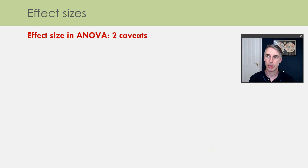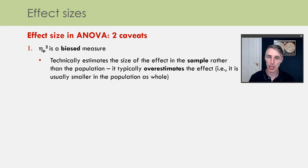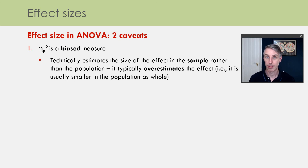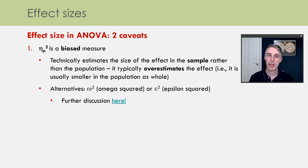Partial eta-squared is by far the most widely reported effect size measure in ANOVA, but there are two important caveats. Firstly, it is biased in a particular sense: it technically estimates the size of the effect in our sample rather than in the population, and it typically overestimates the true population effect — our sample effect size is probably bigger than the one that's really out there. That's why people are increasingly recommending alternatives such as omega-squared or epsilon-squared. Links are available in the slides for further discussion of the relative merits of these measures.